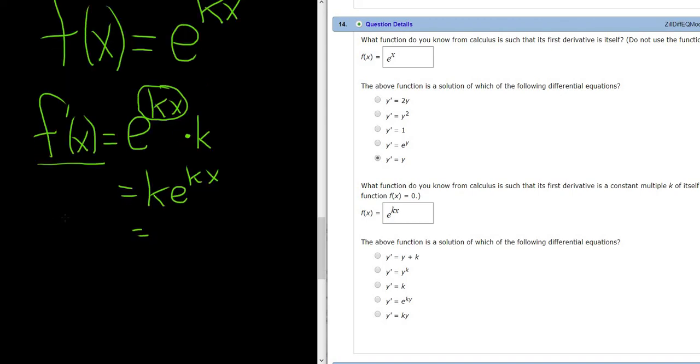So we have f prime of x equal to k e to the kx, but e to the kx is f of x. So if we write f prime is y prime, oh, this is cool, this was not intentional, equals k y.